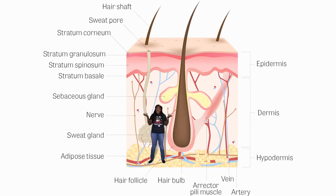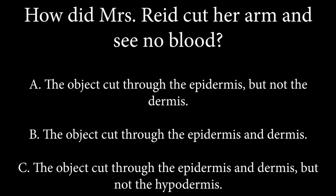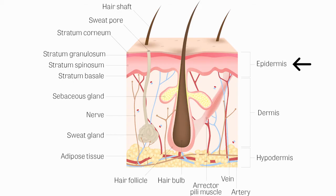We covered all of the structures in the skin. Here's a question: something cut my arm but there's no blood. Did the object cut through the epidermis but not the dermis? Through the epidermis and dermis? Or through the epidermis and dermis but not the hypodermis? If you guessed the epidermis only, you are correct — the epidermis contains no blood vessels. It relies solely on the dermis for its nutrients by diffusion.